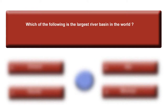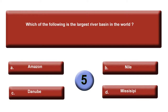Which of the following is the largest river basin in the world? Your options are: option A, Amazon; option B, Nile; option C, Danube; or option D, Mississippi. Time is up. Your correct answer is A, Amazon. And in which country or continent is the Amazon River situated — can you please tell me?